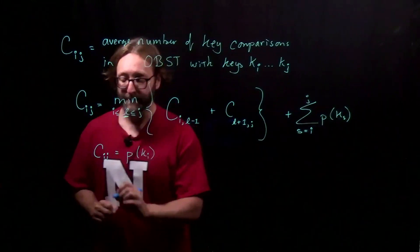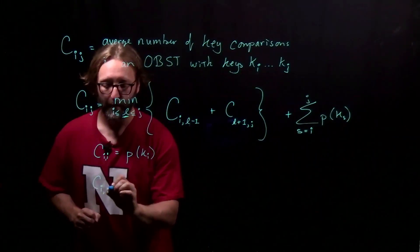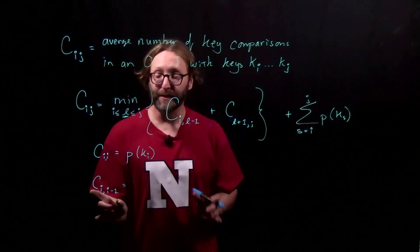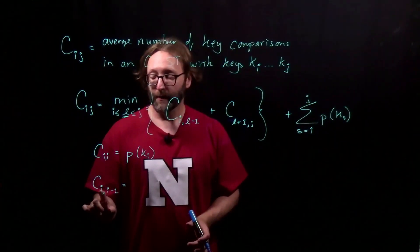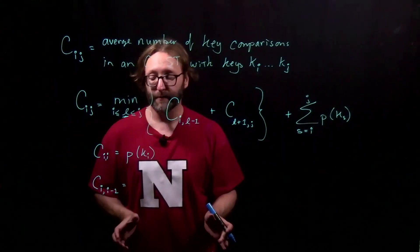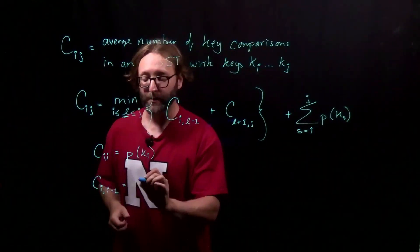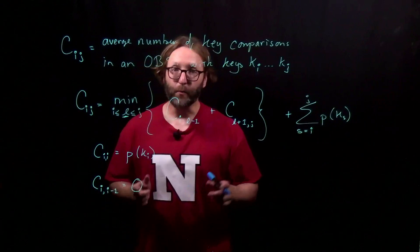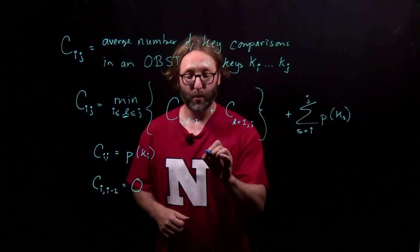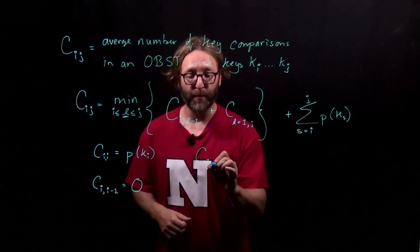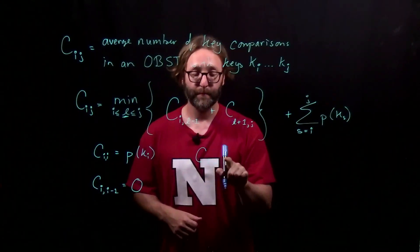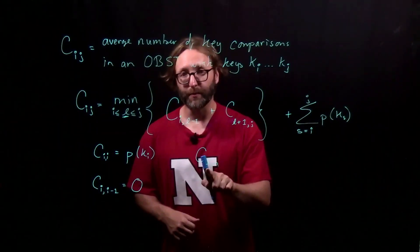We also have another base case, taking into account an empty tree. Keys i through i minus 1 — since they're in order — contain no keys, and the cost of searching an empty binary search tree is zero. Finally, we want to identify our final solution. We're interested in building an optimal binary search tree that contains all of the keys, k1 through kn.